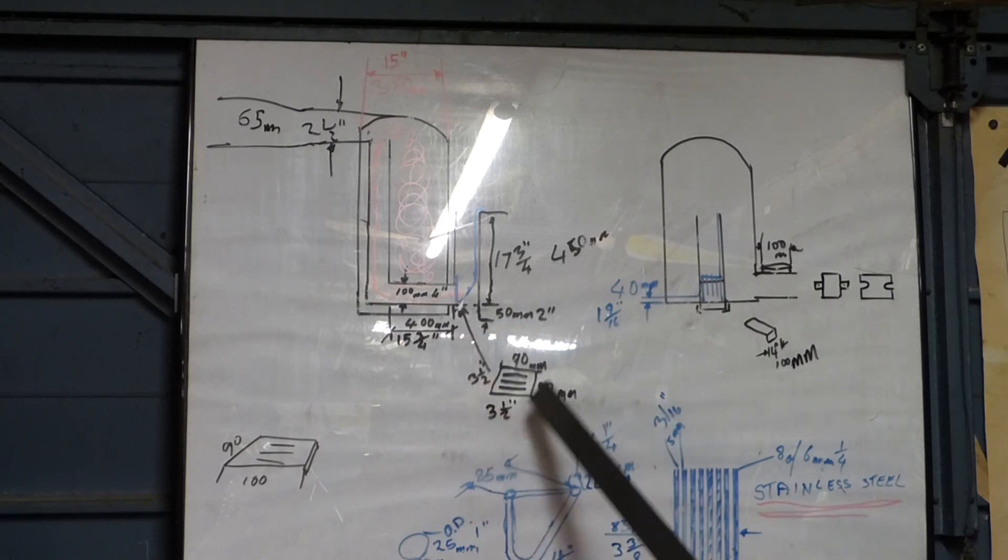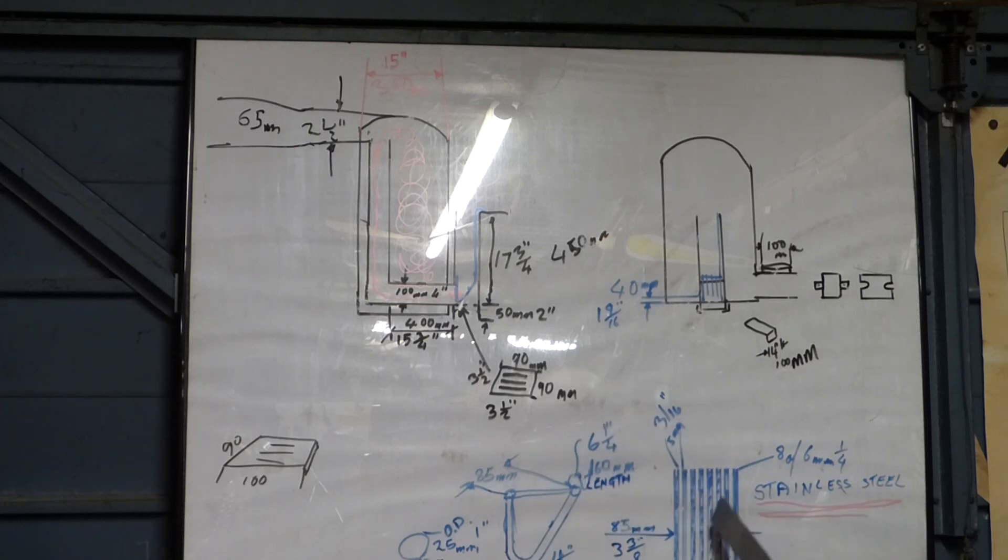There's the measurements. I've put all the measurements on there for you. There's the grill that goes in there, that's that piece. There's the basket which I've drawn there, so you can see how to make one of those baskets. There's all the measurements. Stainless steel 303, which is obviously the cheaper end of the market.